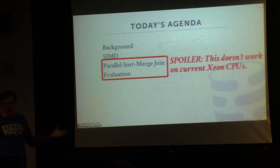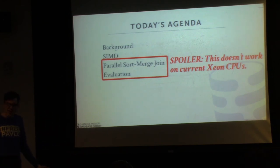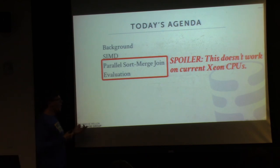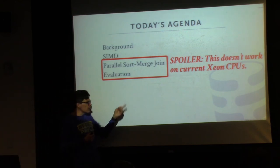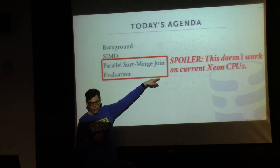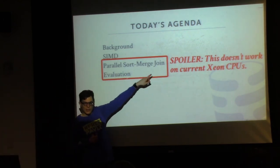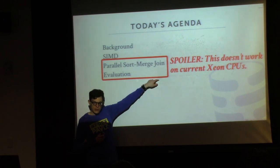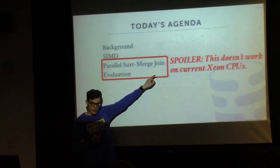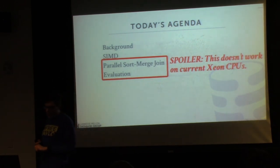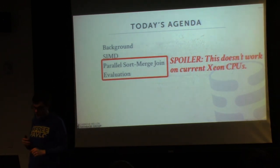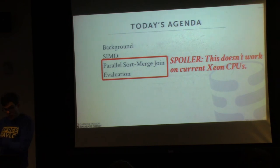You may be thinking: why did they have you read a paper that doesn't work? It's because eventually this will work, and eventually this might actually make sort-merge joins faster than hash joins. But we're not quite there yet on general purpose CPUs.